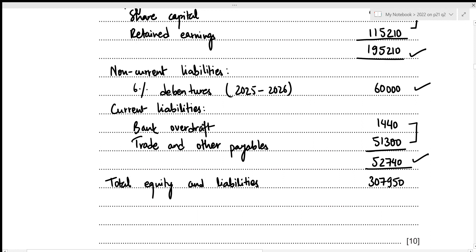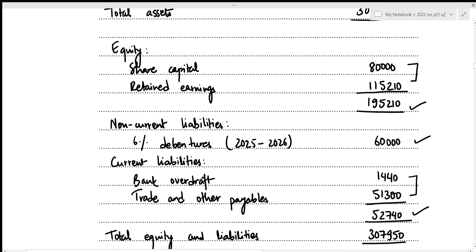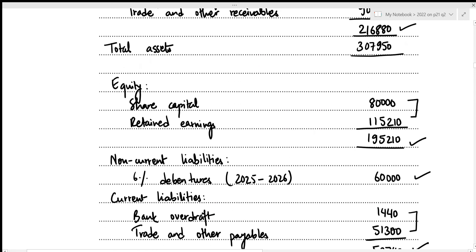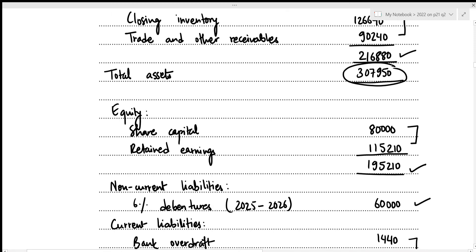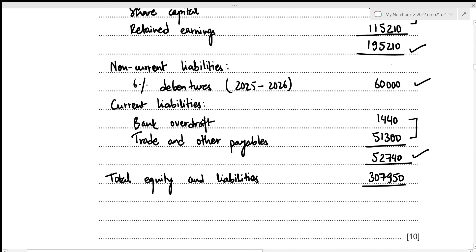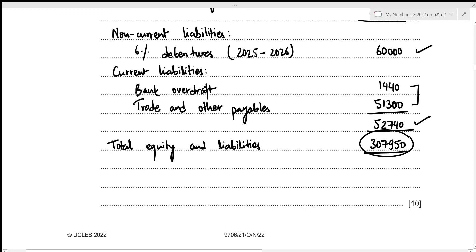Total equity and liabilities: 195,210 + 60,000 + 52,740 = 307,950. This matches total assets of 307,950, confirming the statement of financial position balances correctly.